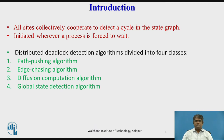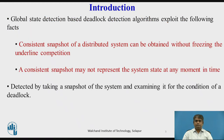Distributed Deadlock Detection Algorithms can be divided into four classes: Path Pushing Algorithm, Edge Chasing Algorithm, Diffusion Computation Algorithm, and Global State Detection Algorithm.